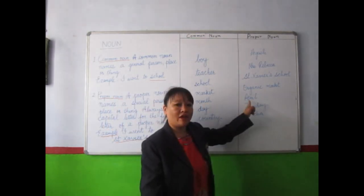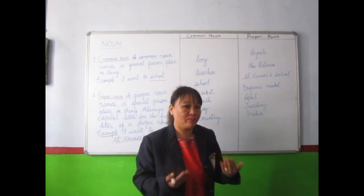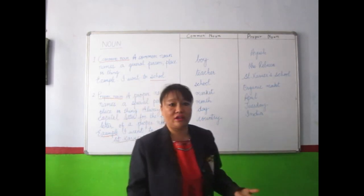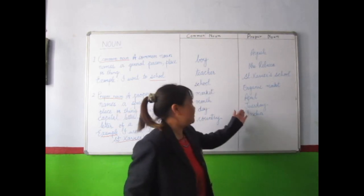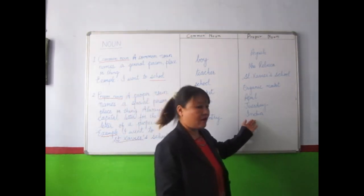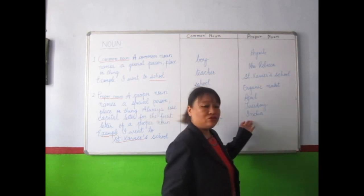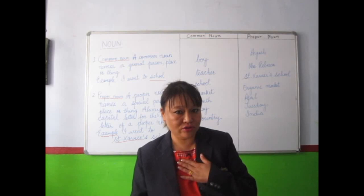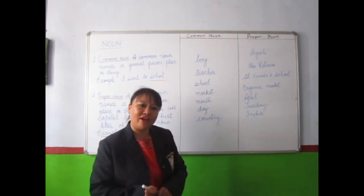Month — April. I am talking about the month of April. And day — which day is today? Today is Tuesday. And country — if I say India, it's a proper noun. I am talking about a country named India. And this is our country. The name of the country is India.